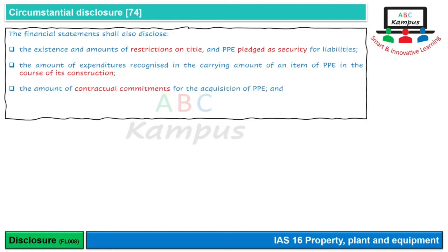Teesra circumstantial disclosure hai: amount of contractual commitments for the acquisition of property plant equipment. Kabhi kabhi advance mein commitments ki gayi hoti hain — for example order diya hota hai jismein ek plant hamara order par banega aur 6 months ya ek saal baad deliver hoga. Is disclosure ka faida ye hai ke users ko pata chalta hai ke future mein acquisitions ke kya plans hain, business kitna expand karna chahte hain, aur saath hi ye bhi ke future mein kuch cash outflows honge jo abhi liability mein show nahi kiye gaye.